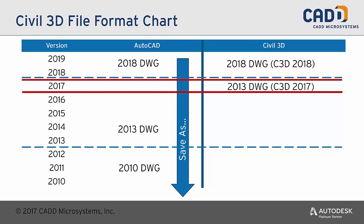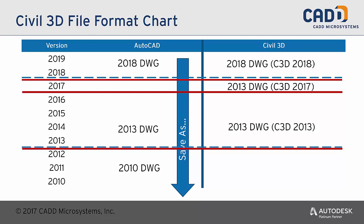However, when we go to 2017, this one is sort of locked in place. Even though it uses a 2013 DWG, just like 2016, 2015, 2014, and 2013, the objects are more intelligent than those previous versions, so they cannot be used backwards. As you can see, there's a big red line between 2017 and 2016 where Civil 3D objects are concerned. The 2013 DWG and the Civil 3D 2013 objects can be used by 2013, 2014, 2015, and 2016 — all four of those versions can share Civil 3D drawings with each other. However, you cannot share backwards from 2013 to get to 2012.